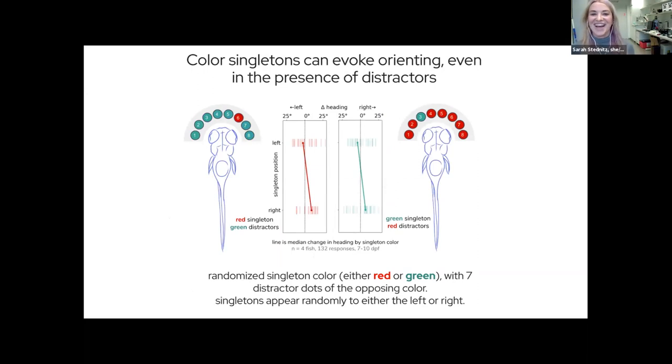Why is color important? I like to use the color pop-out example because it's the most immediately obvious to people, and likely to fish. Fish have excellent color vision—they see red, green, blue, and ultraviolet.